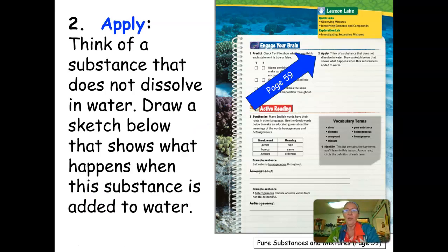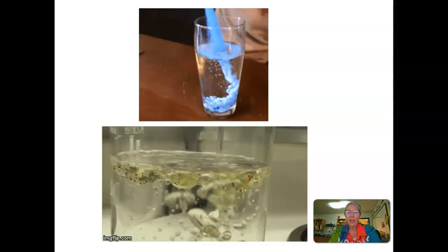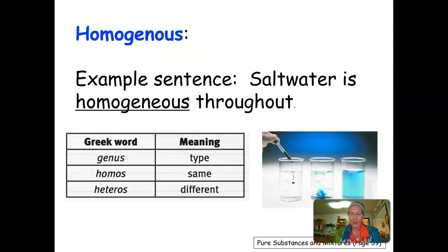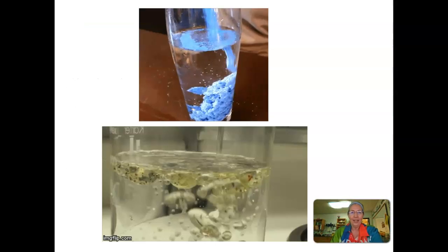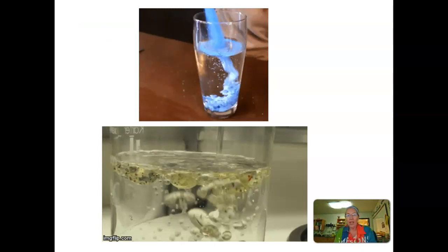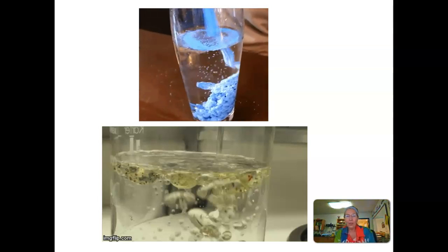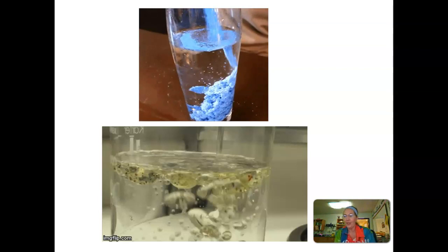The next question asks you to think of a substance that does not dissolve in water and to draw and sketch in that area what happens when you add that substance to water. And so on the next slide, I have a couple of GIFs to help you visualize that. And so on the top, we have something being added to water. I think that's probably magic sand, I think is what they call it. And so we have a lot of phenomenon going on there in the top picture. But the one that I want you to pay attention to right now is that it is not dissolving in the water.